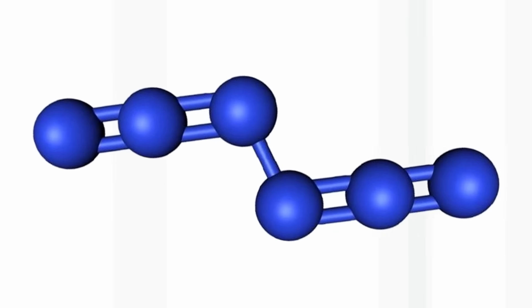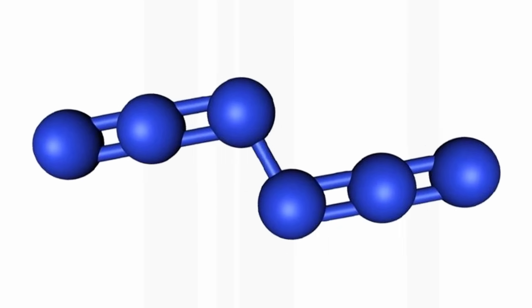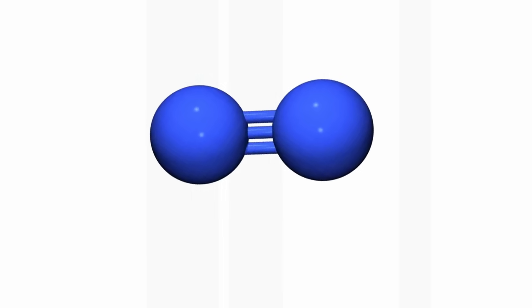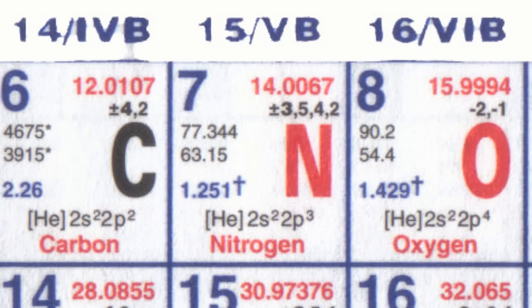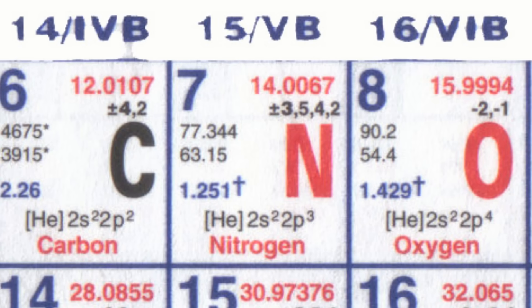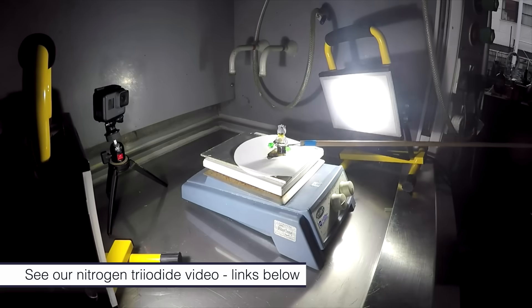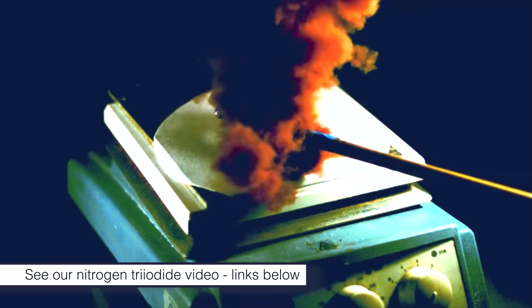The difficulty of making allotropes of nitrogen is that N2, the common form of nitrogen, has a very strong bond between the two nitrogen atoms. In fact, it's the strongest bond between two atoms that are the same anywhere in the periodic table. This means that if you make a molecule with nitrogen atoms with different sorts of bonds between them, it can decompose very easily into N2 molecules with a huge release of energy — it would be explosive and therefore very unstable.